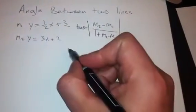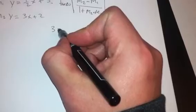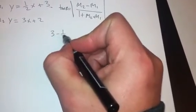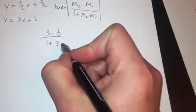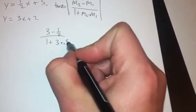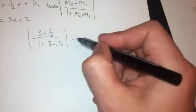So we'll plug that in and we'll say three minus one half over one plus three times 0.5, which is one half. Take the absolute value of that and set it equal to tan theta.